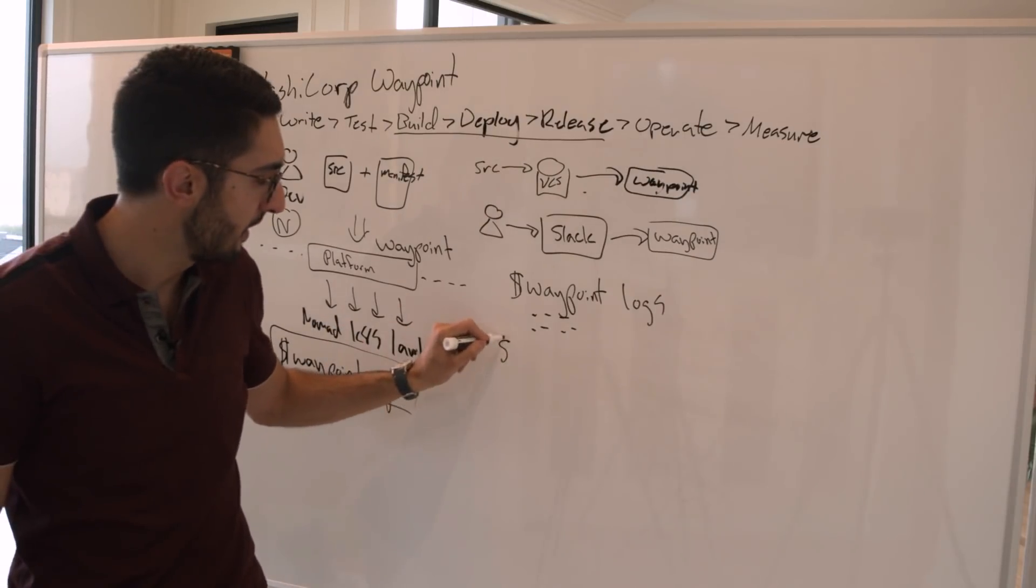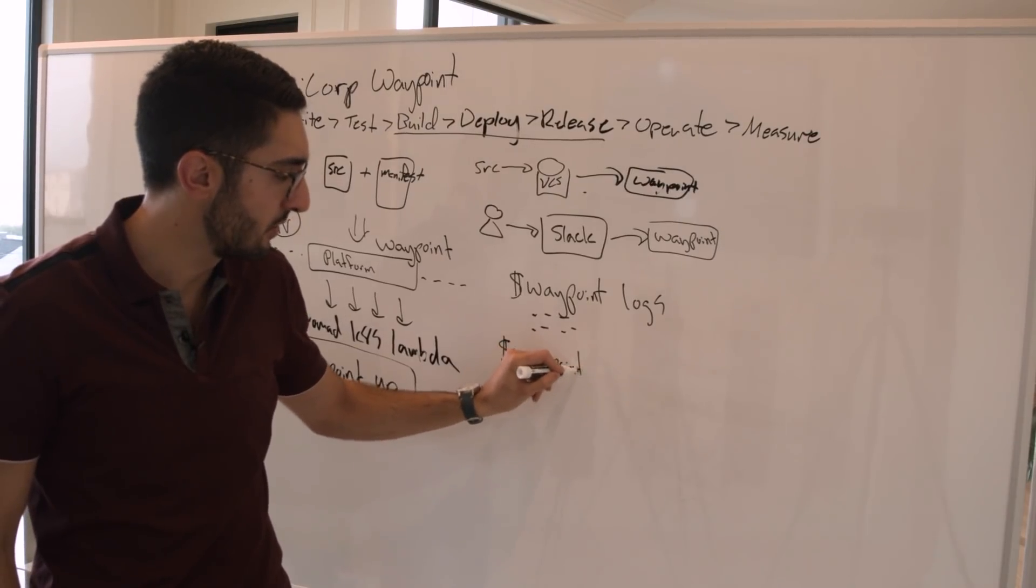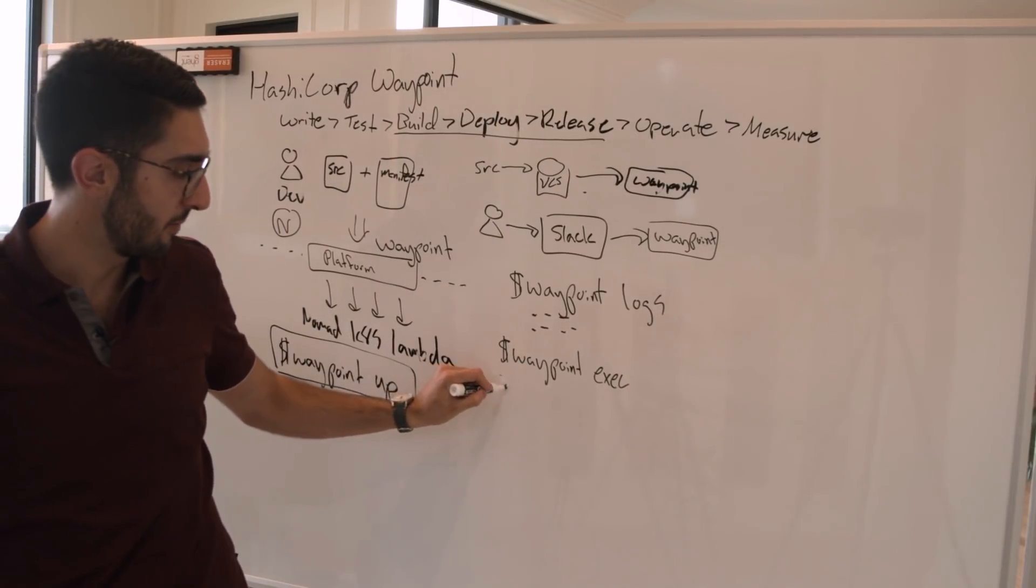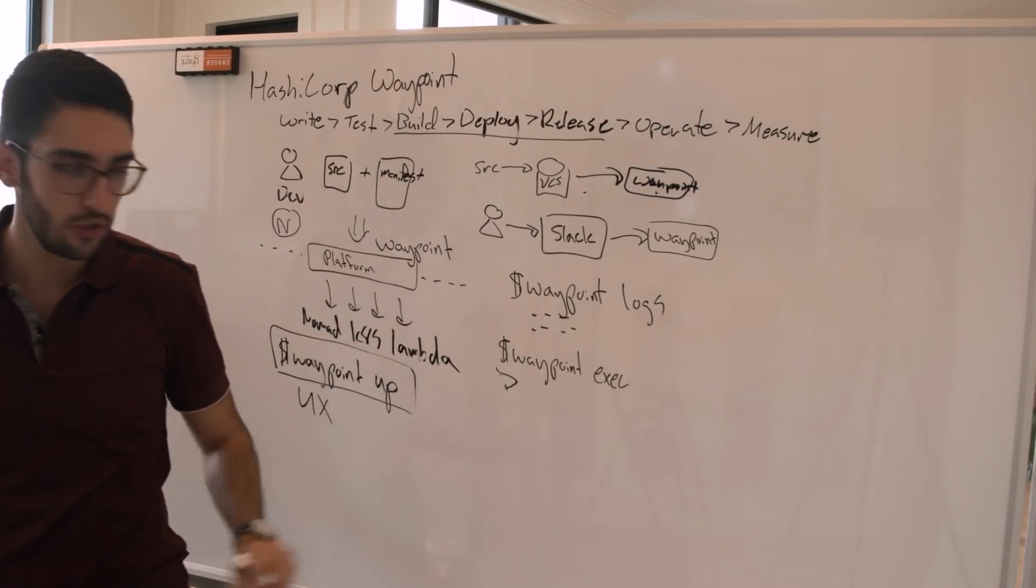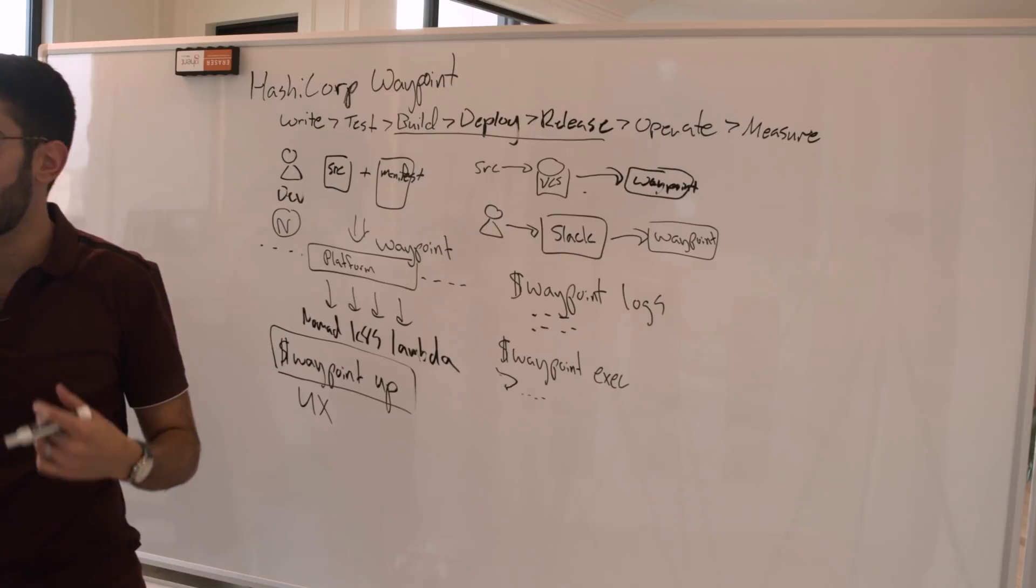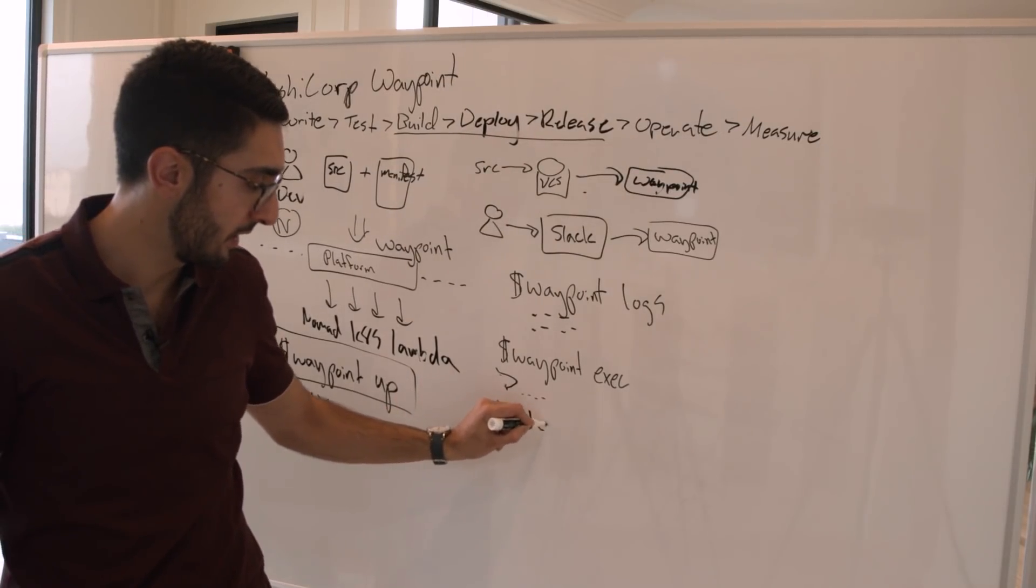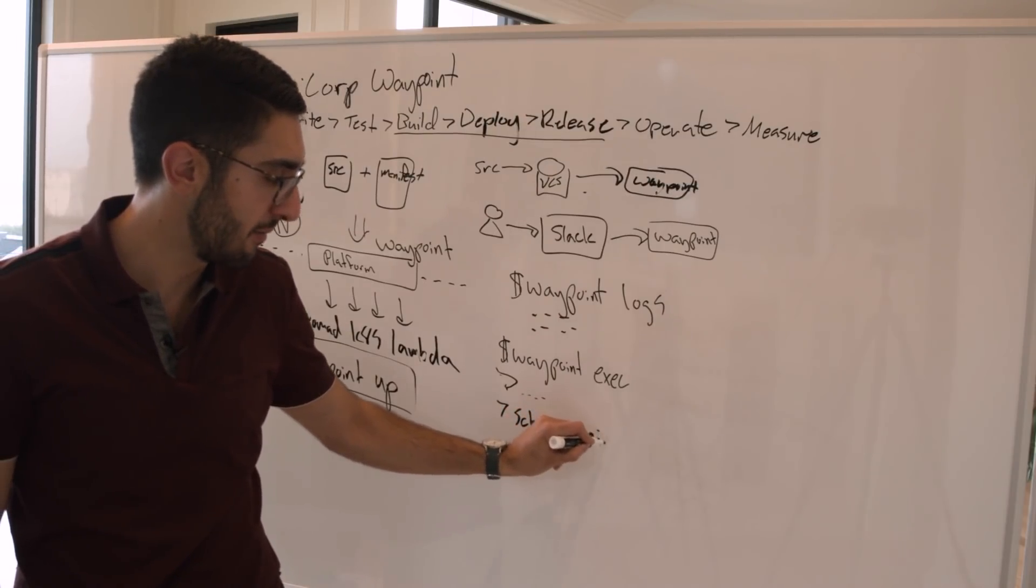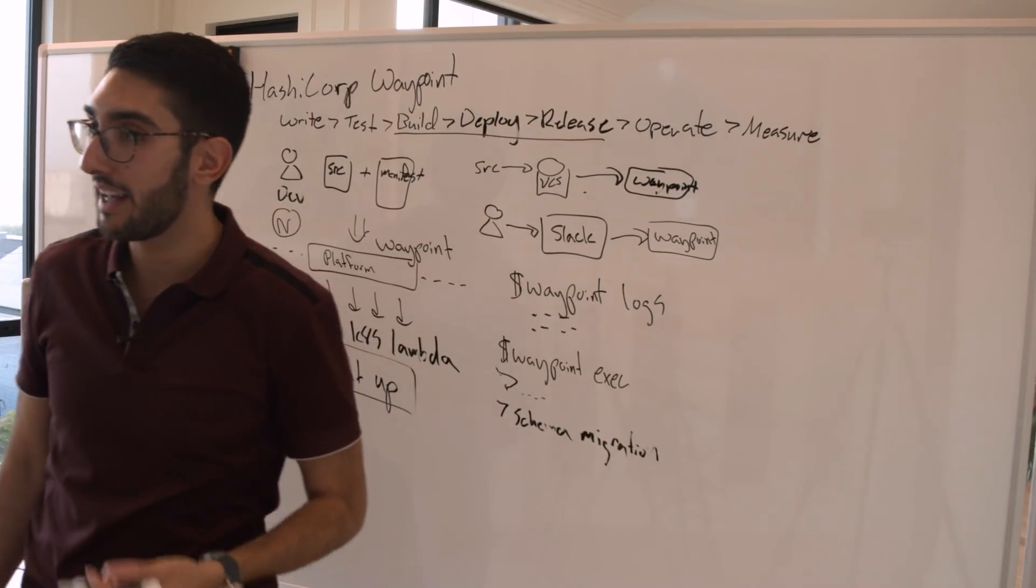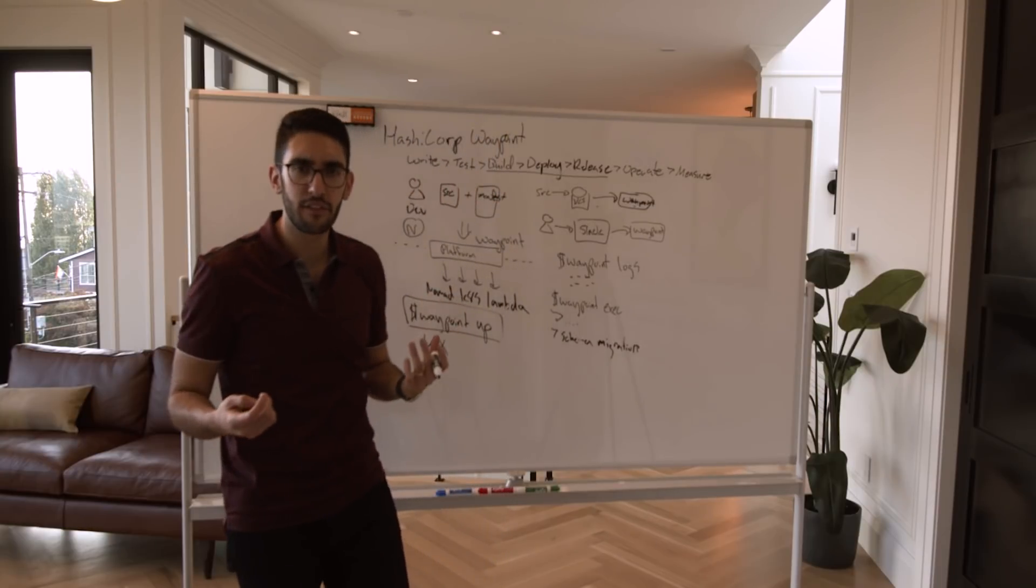The second thing we have available is Waypoint exec. And what Waypoint exec will do is drop you into a production session where you basically have a shell available. So you can run any command you need to here. And so what this might be useful for is everything from, I just did a deploy, I actually need to do a schema migration. Maybe my application is stuck and I want to debug it and I want to get an environment where I can interact and it looks like production.